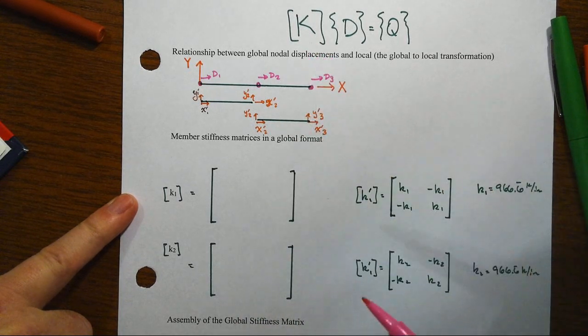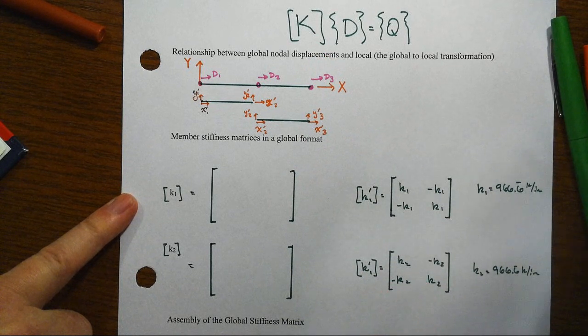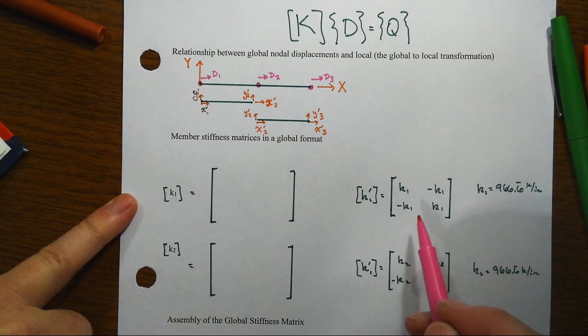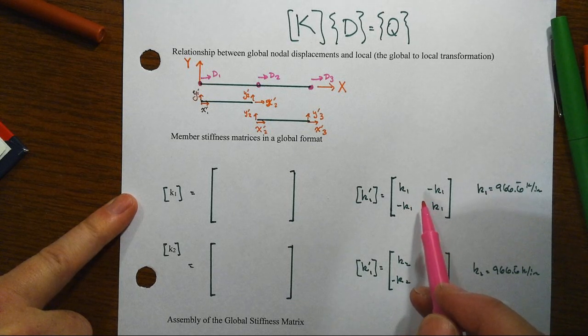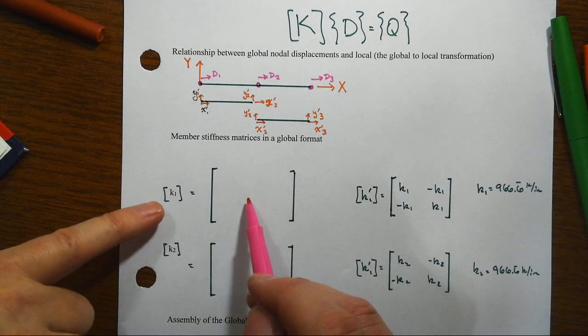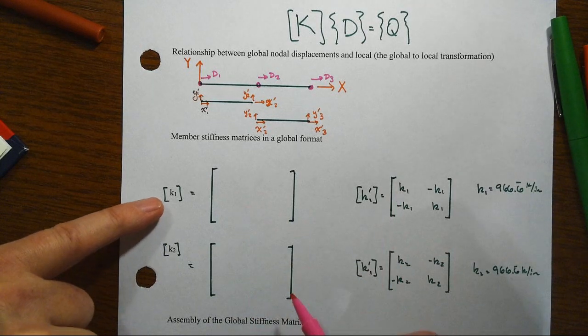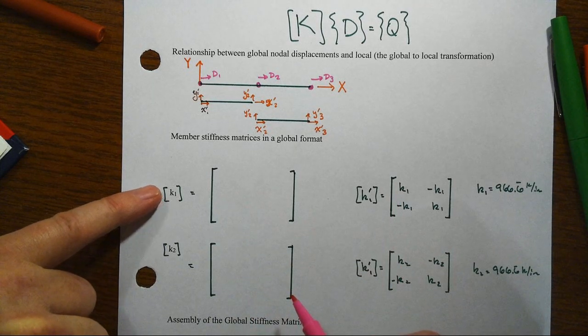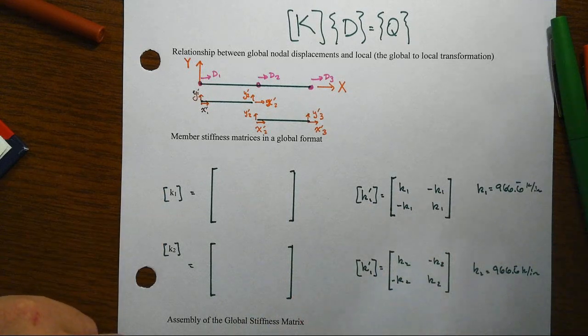All right, so just to recap real quick, we start with a little local member level and it's only in its own member format. Transform it into still a member matrix but in the global format, and then we can assemble the big structural one by assemblage of really just adding all of these little ones up.